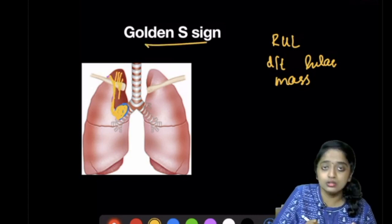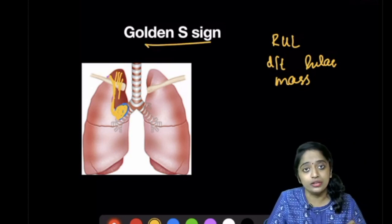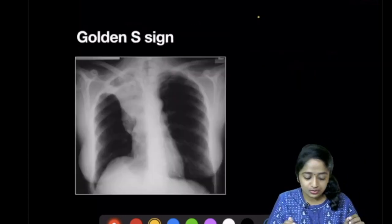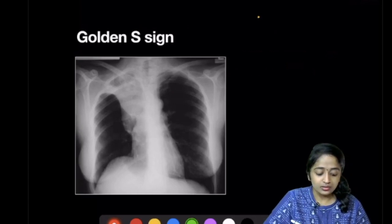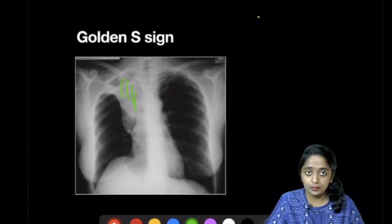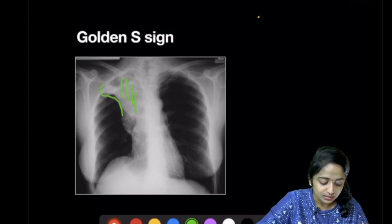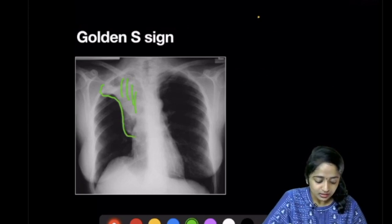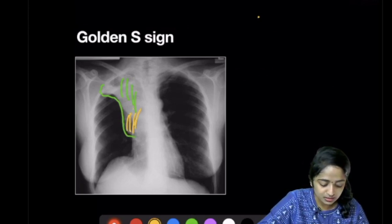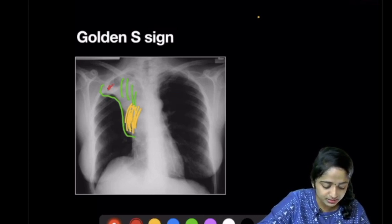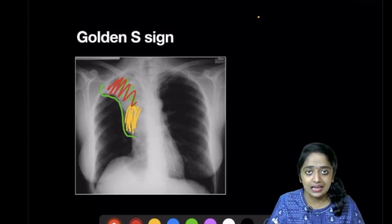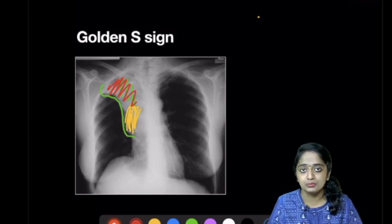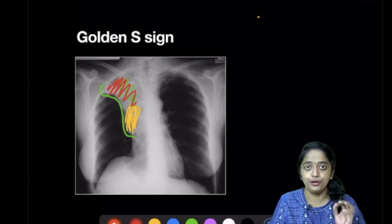On this radiograph, you can see loss of aeration and volume loss in an S-shaped manner — this part representing the hilar malignancy and this part representing the collapsed lung. This is the Golden S sign of right upper lobe collapse due to a hilar mass.